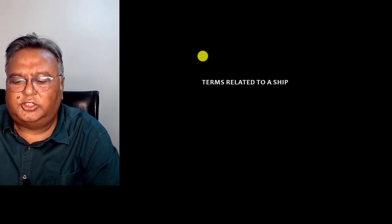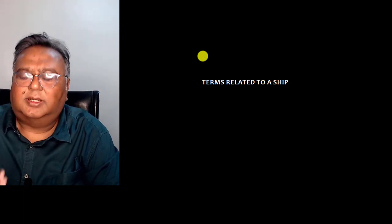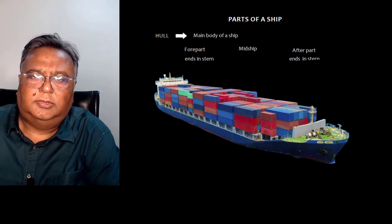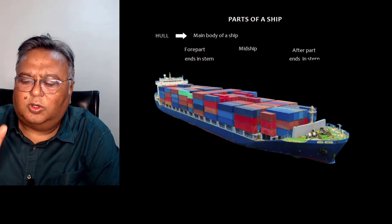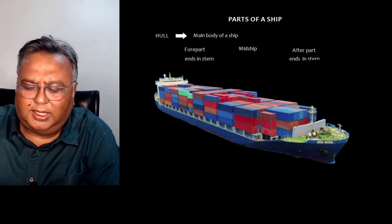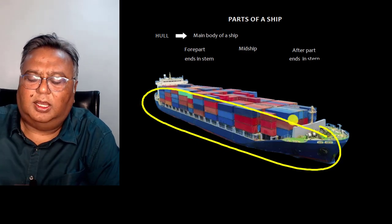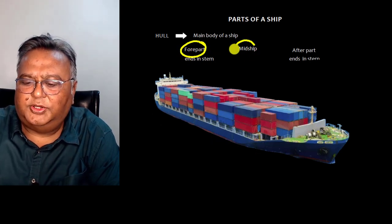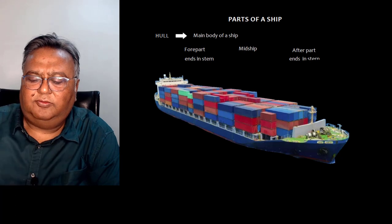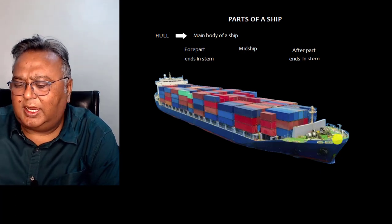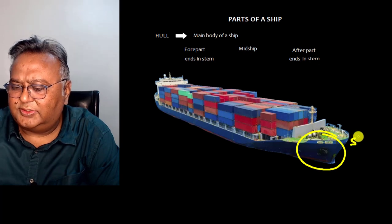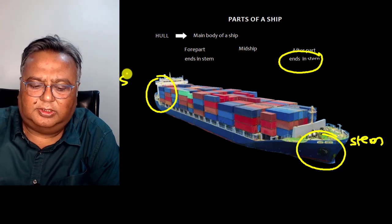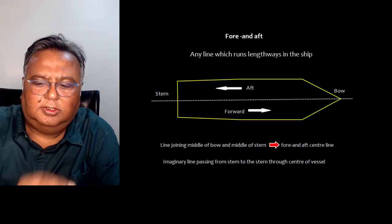Welcome to this video about general ship knowledge. Let's talk about the terms related to a ship and study parts of the ship. The hull is the main body of the ship. The hull can be divided into three parts: the forward part, the midship part, and the aft part. The forward part ends at the stem and the aft part ends at the stern.